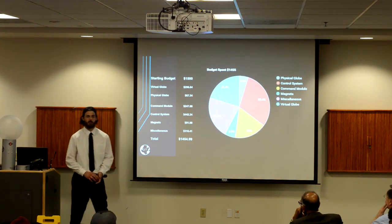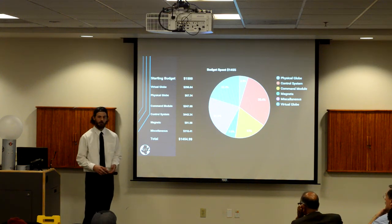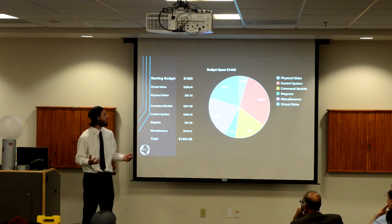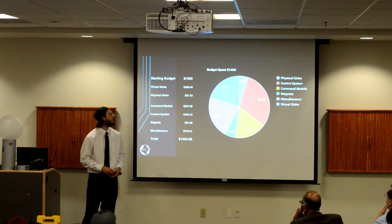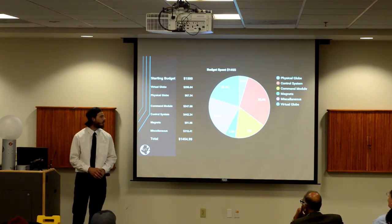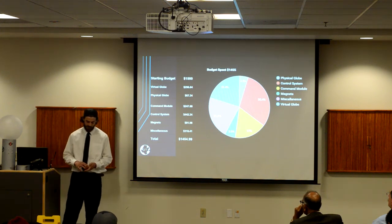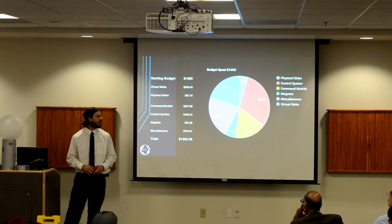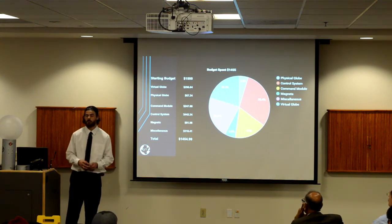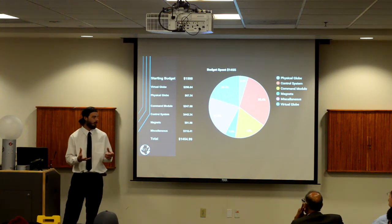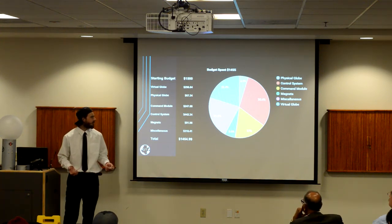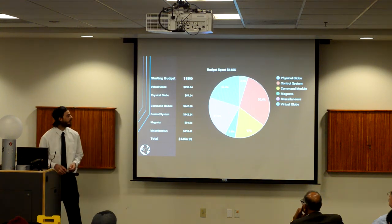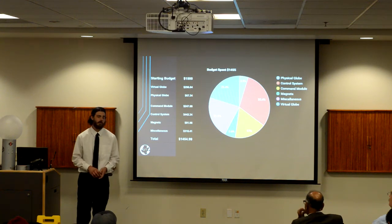We started with $1,500 from our sponsors. We came up with two solutions — the physical globe and the virtual globe — and decided to pursue both. We spent 30% of our budget on sensors, microcontrollers, and the Raspberry Pi. The virtual globe is approximately 20% of our budget, which includes the projector, lens, and semi-clear sphere. The physical globe is about 5%, cheaper because there's no projection, and includes the actual classroom globe and motors for rotation. The command module makes up about 17%, magnets about 6%, and everything else — shipping, tax, and replacement parts — makes up the miscellaneous.